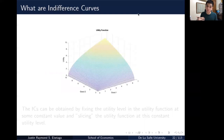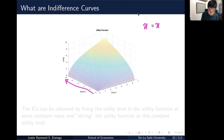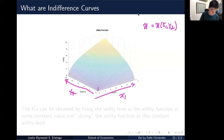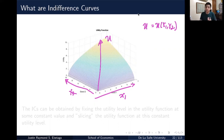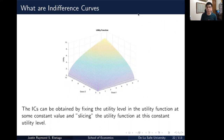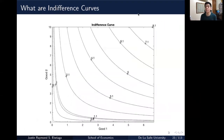If you try to visualize a utility function, it looks something like this — it's in 3D space. We have a space for x2, a space for x1, and a z-axis which is u, the value of the function itself. To derive the indifference curve, we fix u at some point and slice this function horizontally, and we can get the indifference curves.